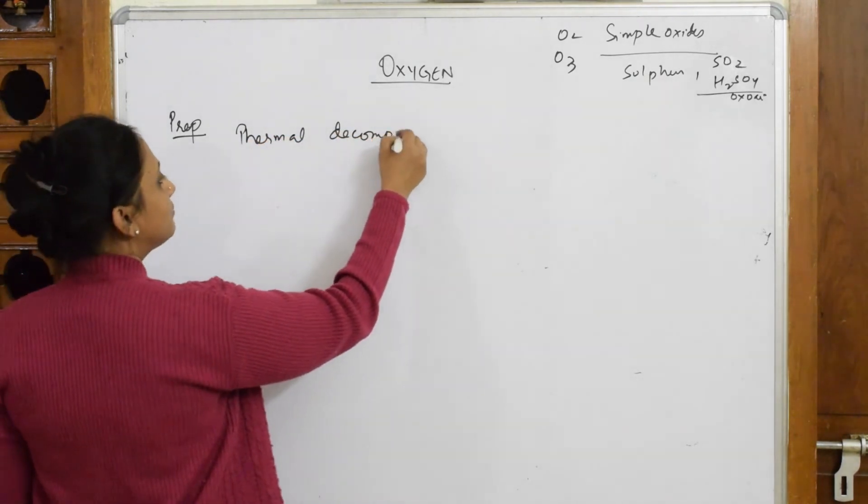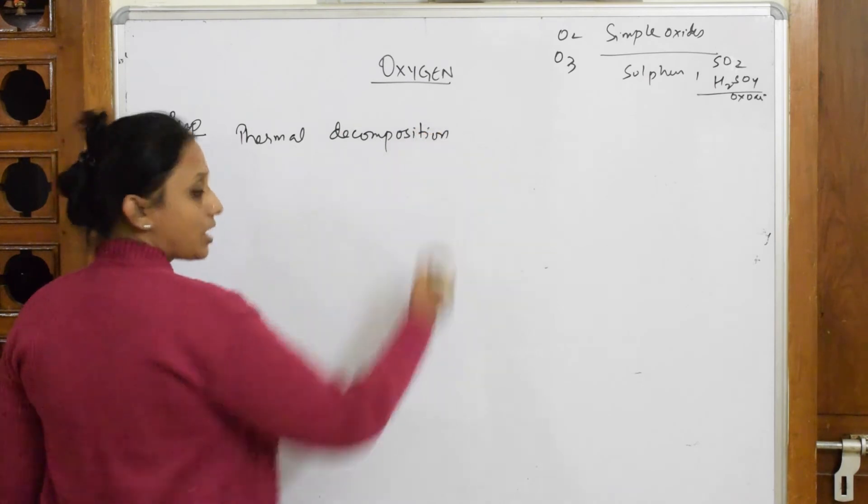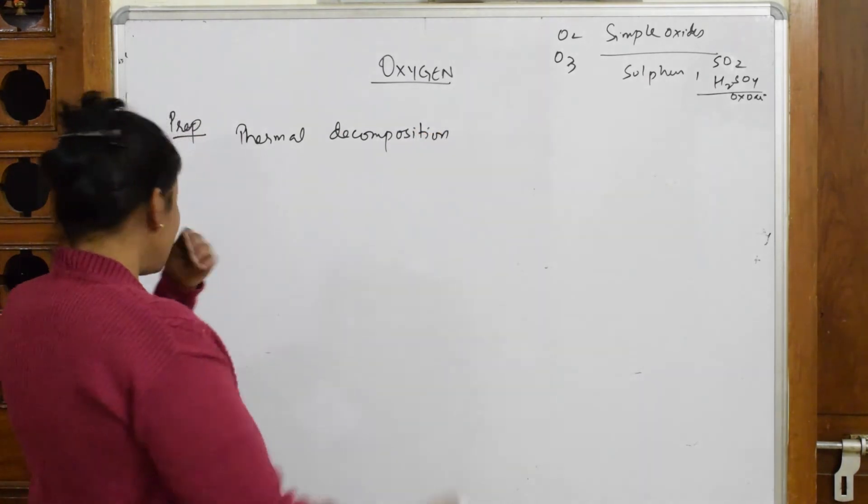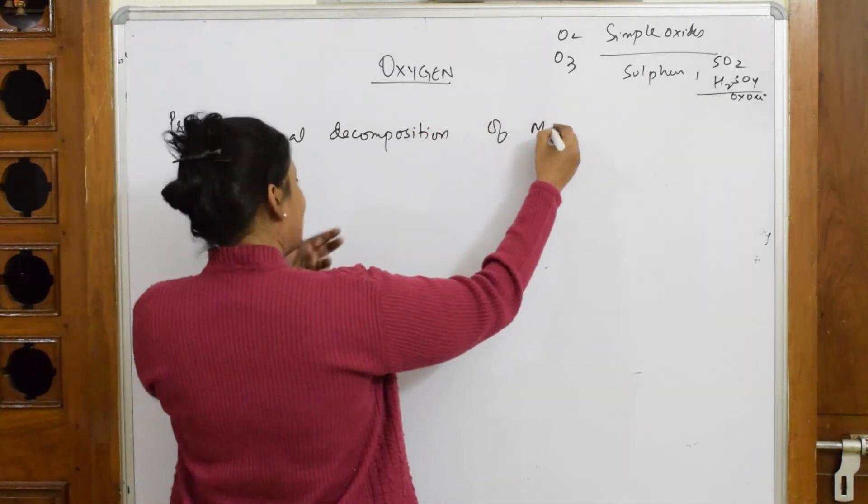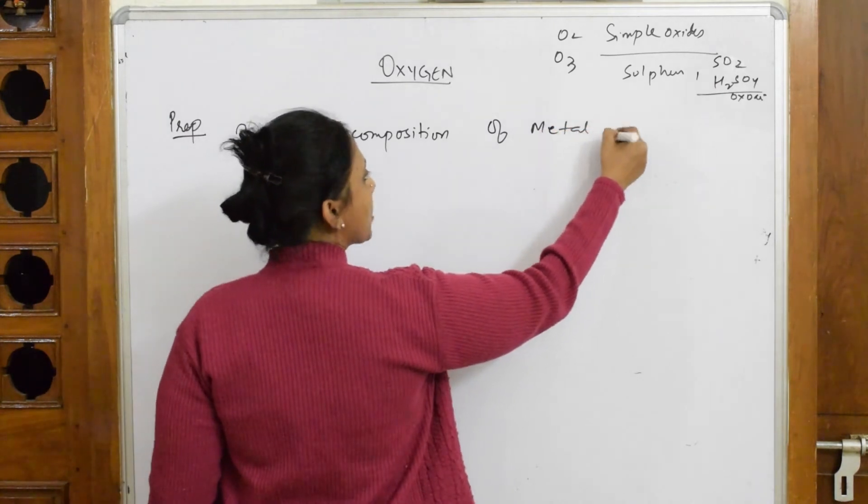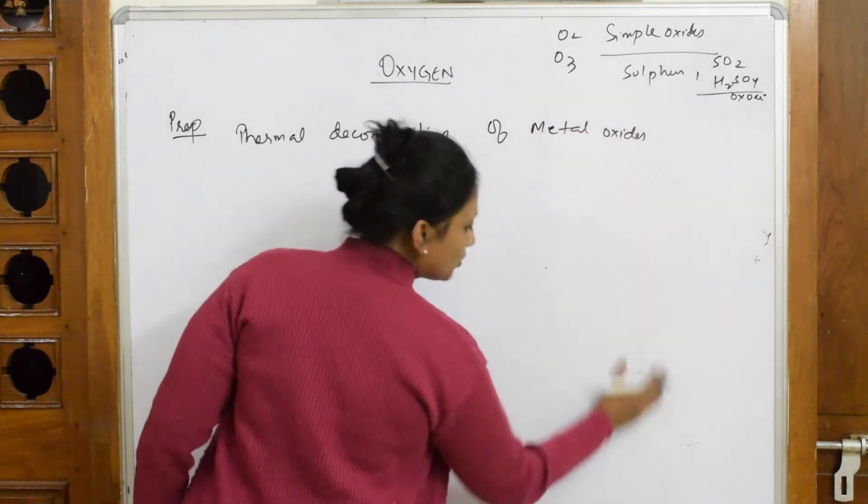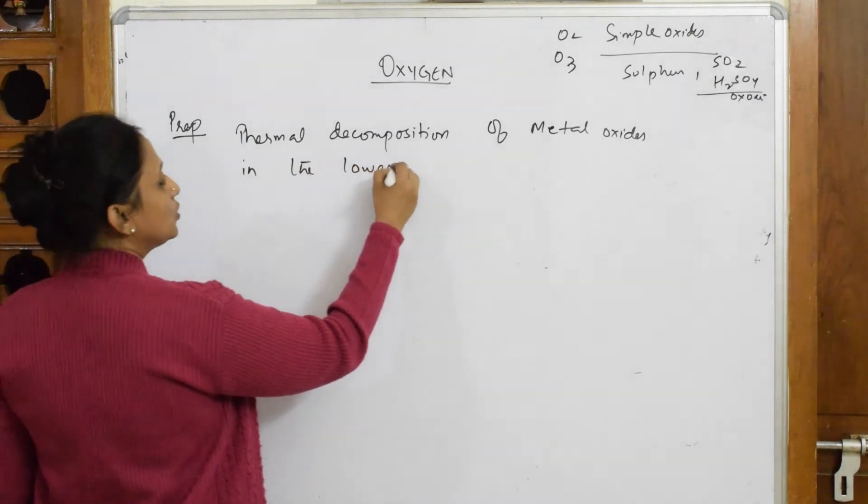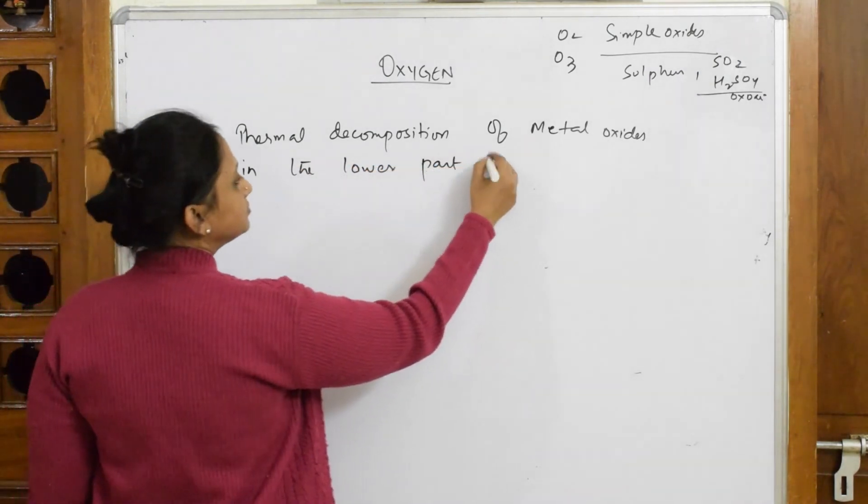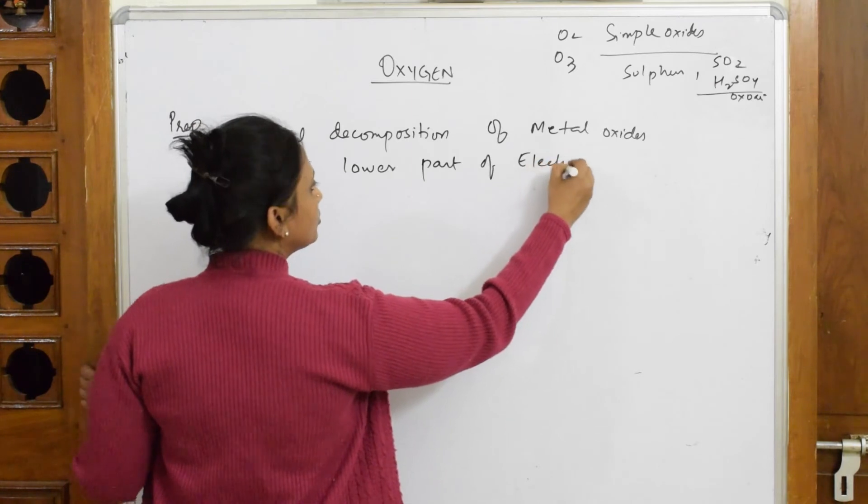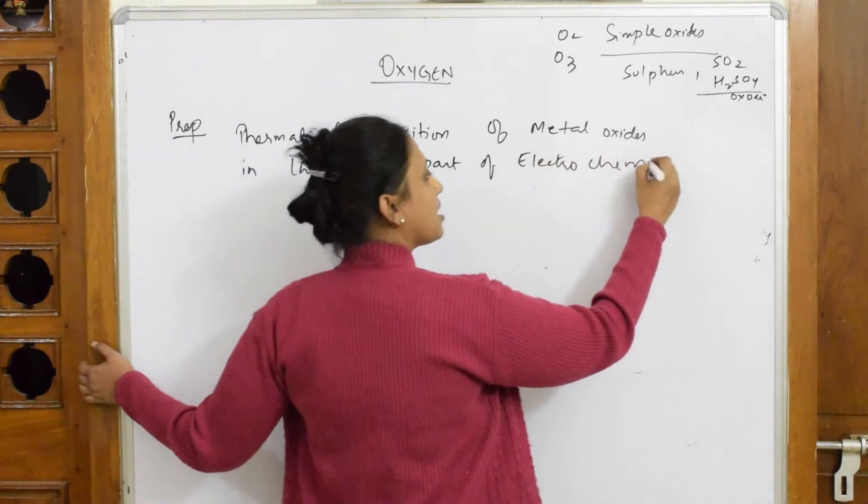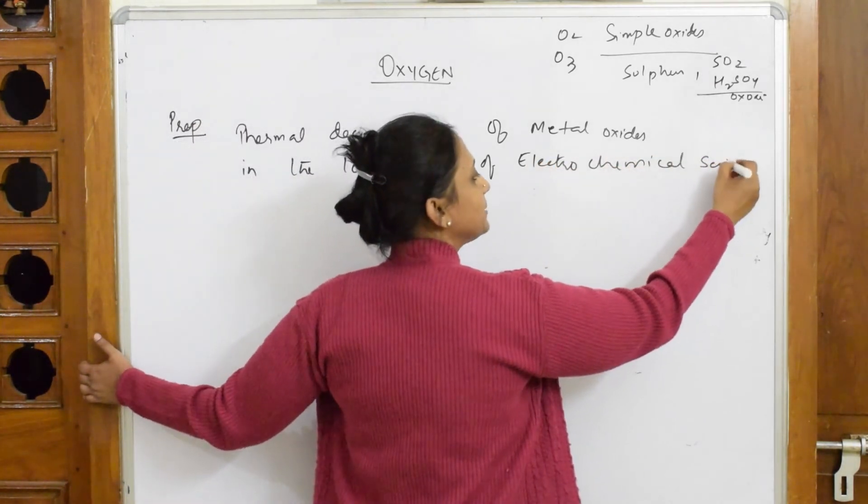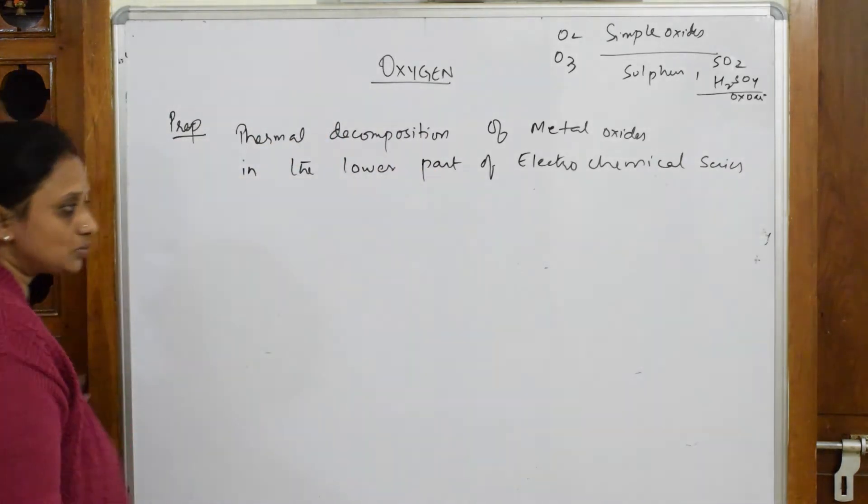That means, using heat, how am I going to prepare oxygen from them? So thermal decomposition of metal oxides - where are they present? In the lower part of the electrochemical series.